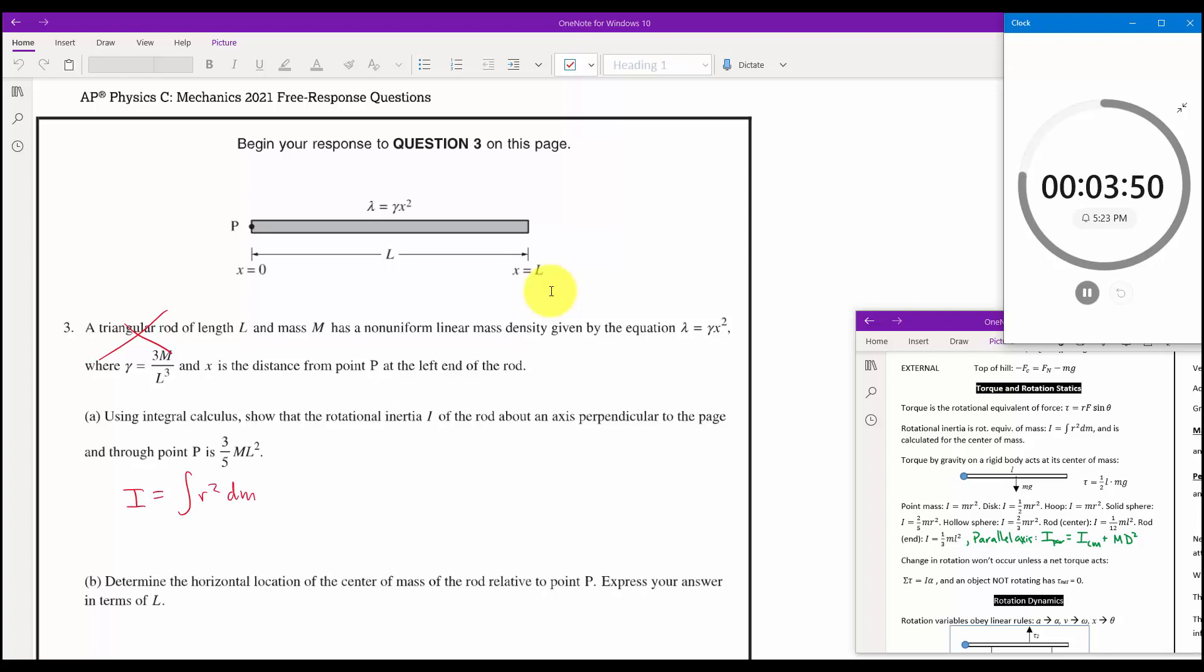Now, we would need to substitute all that other stuff in there. So lambda is technically equal to 3M over L cubed times X squared. But when we do these problems, same thing for the center of mass, which guess what? That's part B. We would replace the DM. In this case, it's just the X direction. So we'd put X squared. And then in place of DM, we have to put lambda DX. So we replace that here. Lambda DX. And so they'd be X squared multiplied by 3M over L cubed X squared DX.